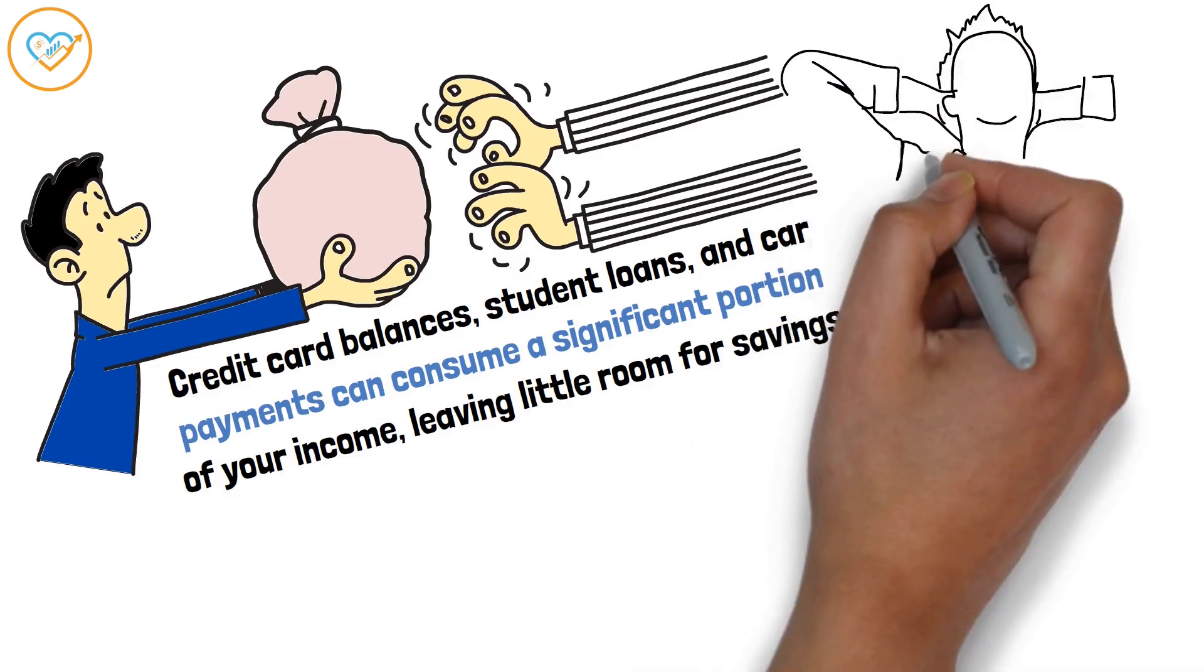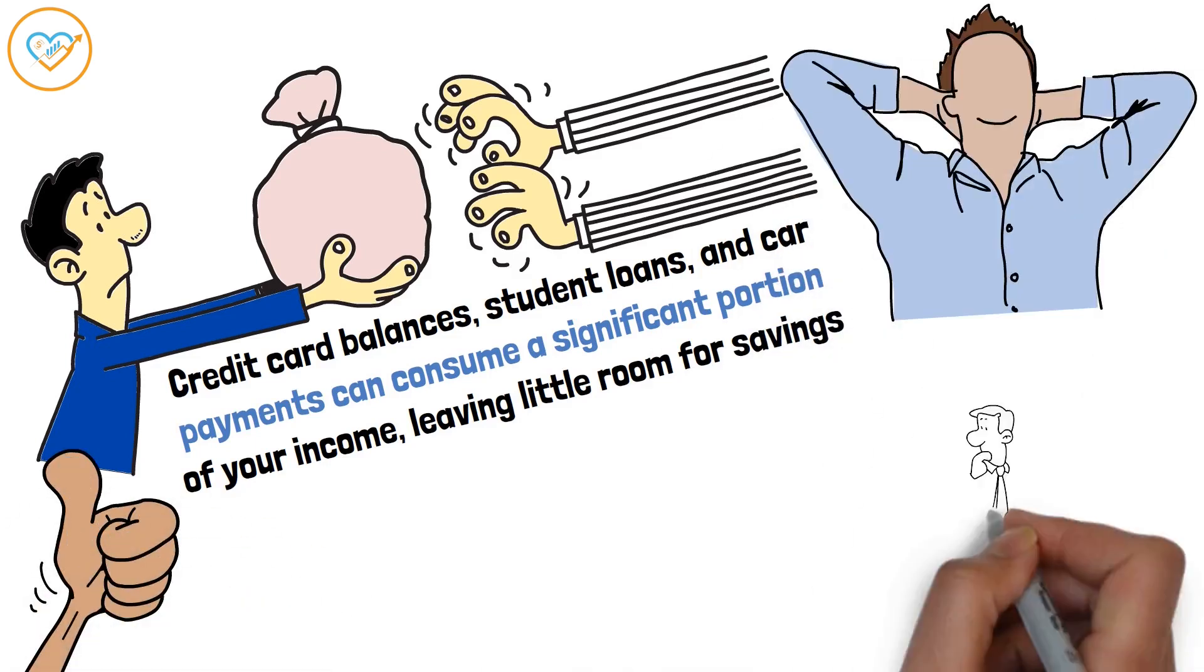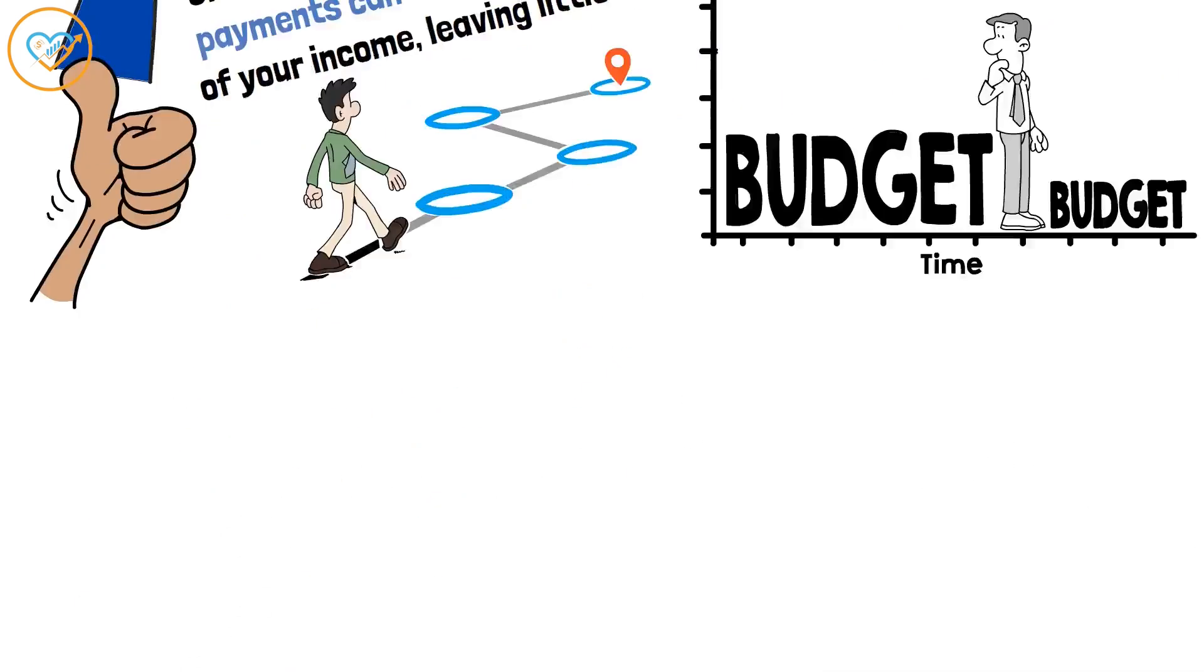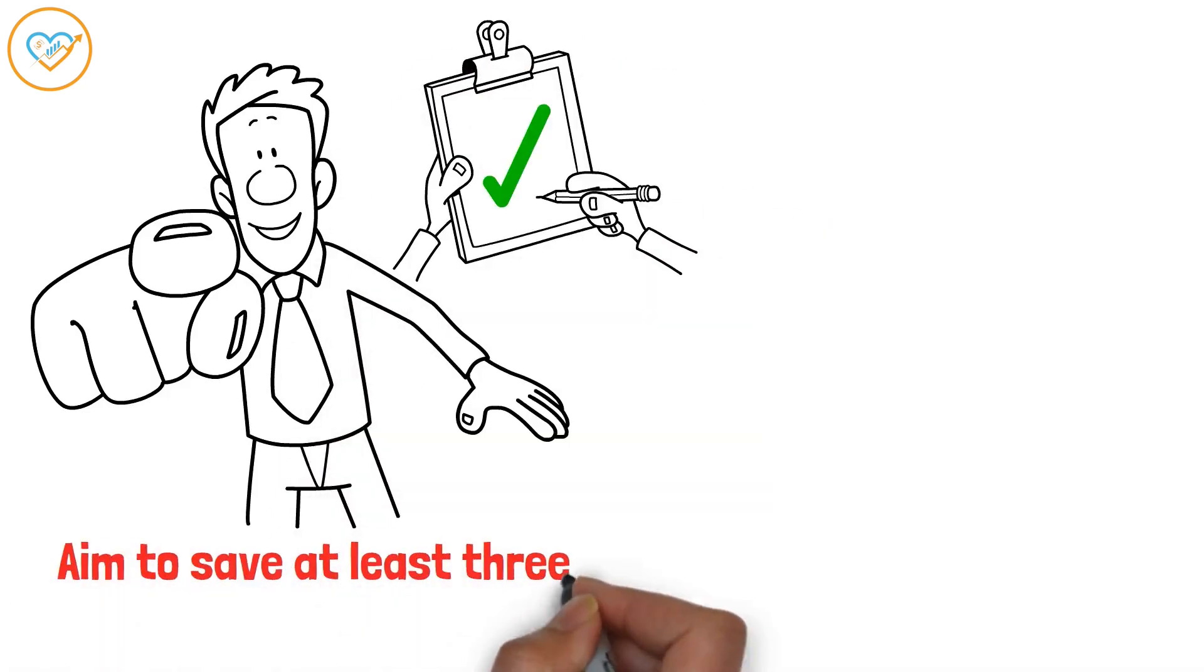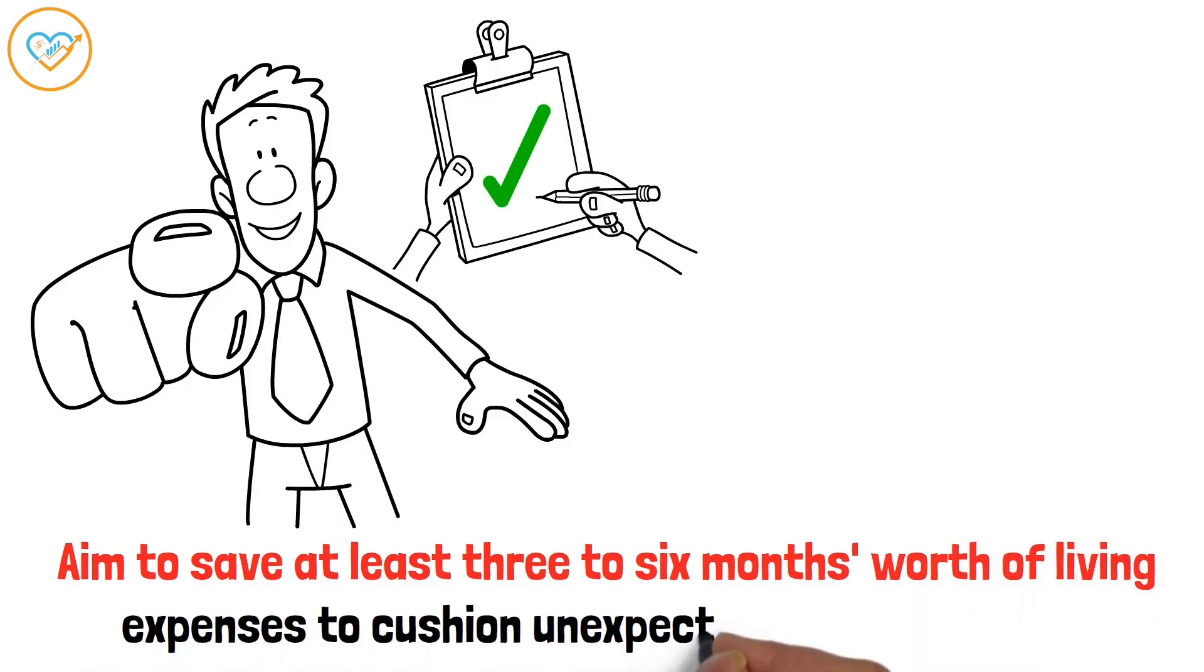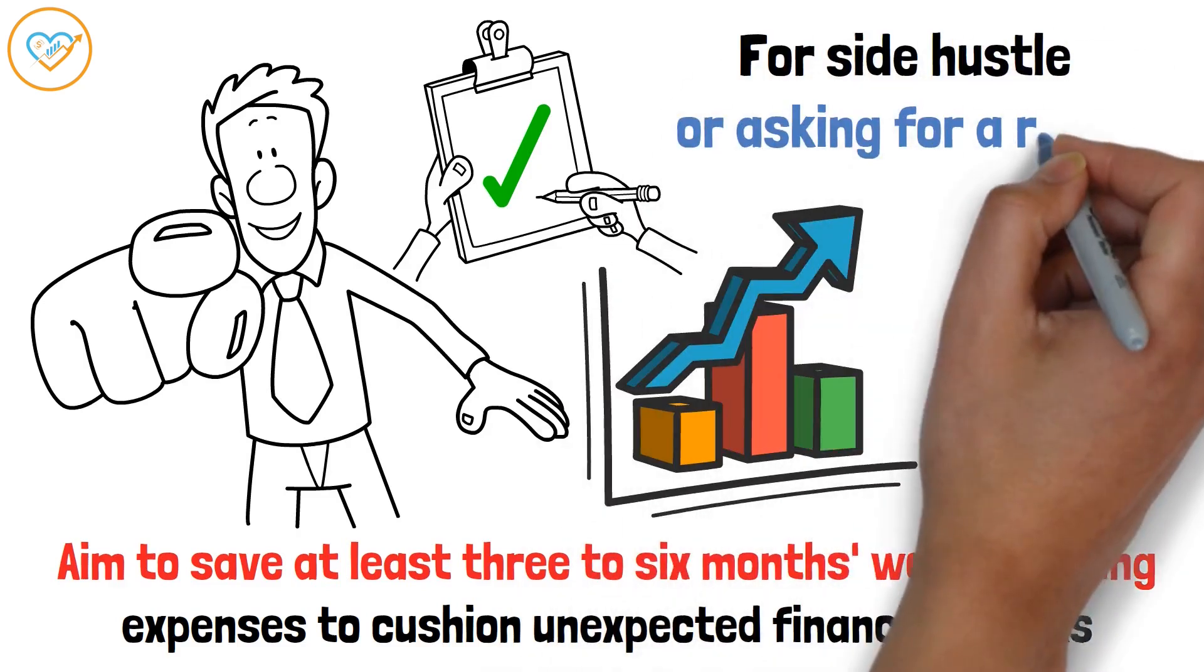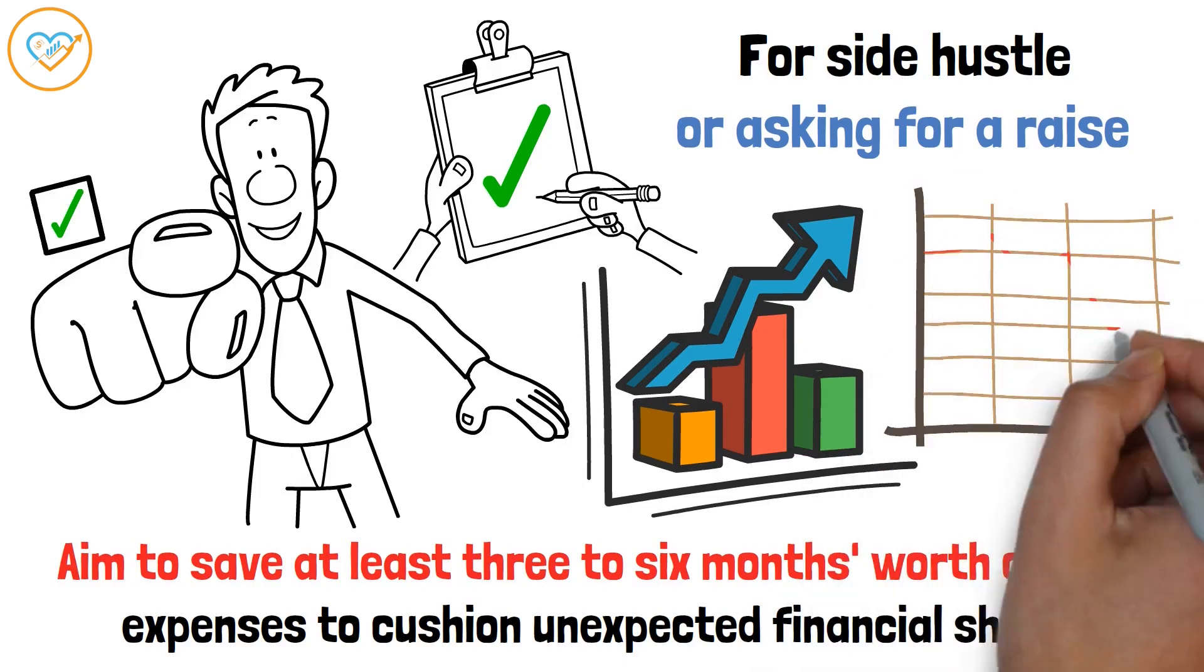Breaking free from the paycheck to paycheck cycle requires discipline and determination. Start by creating a realistic budget. Track your income and expenses to identify areas where you can cut back. Building an emergency fund is also crucial. Aim to save at least three to six months' worth of living expenses to cushion unexpected financial shocks. Consider increasing your income through a side hustle or asking for a raise. Every extra dollar can help you build a buffer and reduce financial stress.